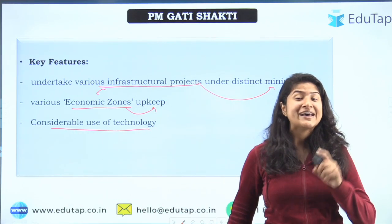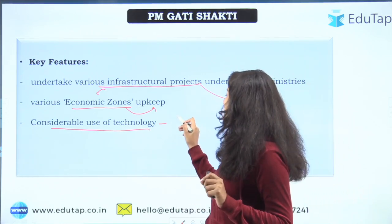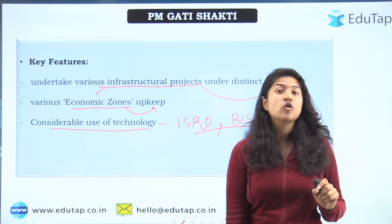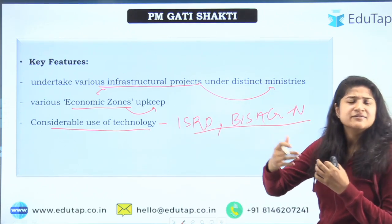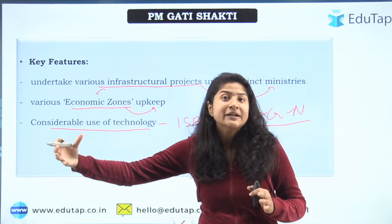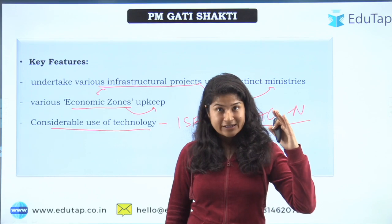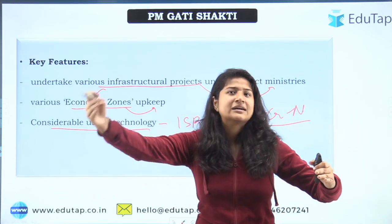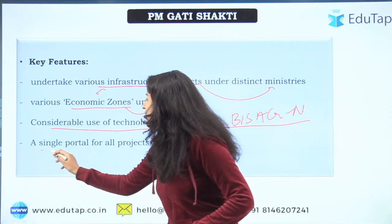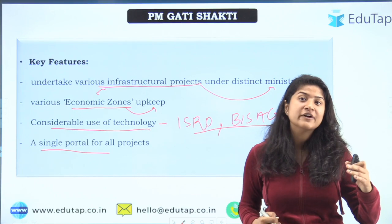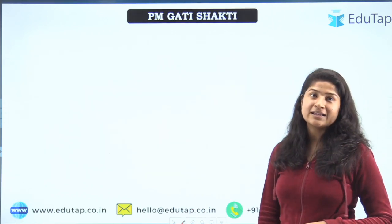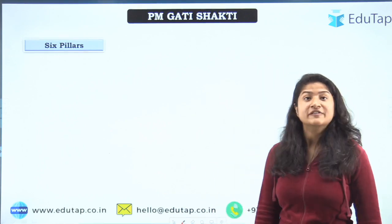The next key feature is considerable use of technology. The government has decided to use modern technologies, especially taking help of ISRO and BISAC. Imagery satellites would help understand how much work has been done, the progress of different departments, and when a particular project would be completed so the next department can initiate their step. Apart from that, there is a single portal for all projects, providing a systematic way of tracking what work is going where and in how much time.